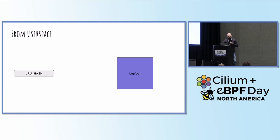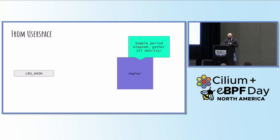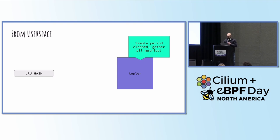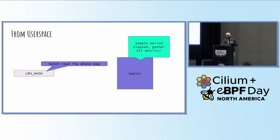From the user space standpoint, we have that hash map in the kernel which gives us all of our information about all of these processes. Occasionally, once our sample period has elapsed — so three seconds — we go and gather all of the metrics from the kernel and spit them out into the metrics pipeline. The way we do that is we just batch read the whole map. If we know about 32K processes, we just read 32K entries out of the hash map.